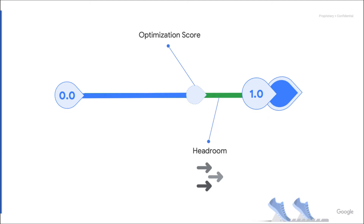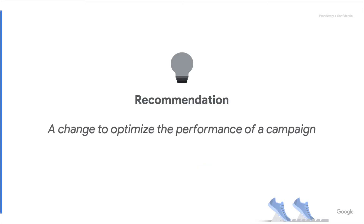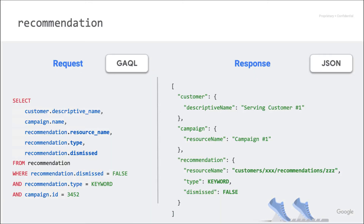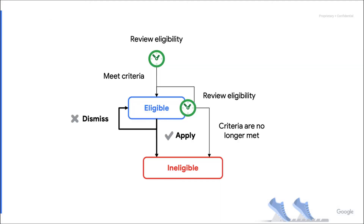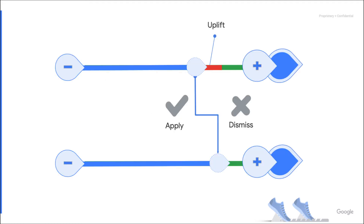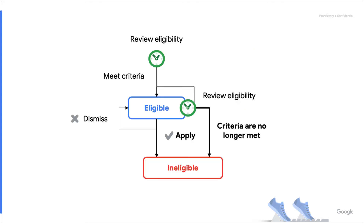Let's start with a quick reminder of what we already discussed in previous episodes. An optimization score below 100% means that there is room for improvement. In such a case, the Google Ads API may share recommendations. Each recommendation represents one change that can be applied to optimize the performance of campaigns. Eligible recommendations are retrieved in real time using the recommendation resource type. They come with many details, such as impact metrics and related entity IDs, and they can be applied or dismissed. Applying or dismissing recommendations is instantaneous and directly impacts the optimization score. Eligible recommendations become ineligible when they are applied or when the eligibility criteria are no longer met.